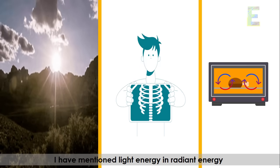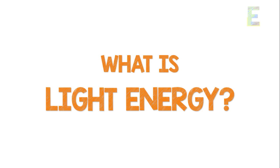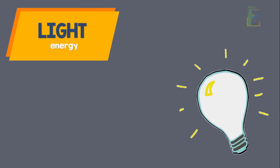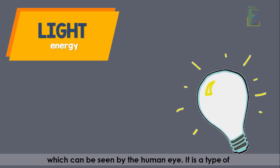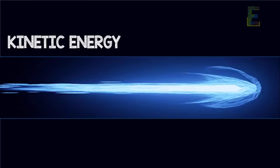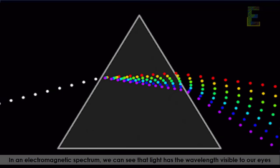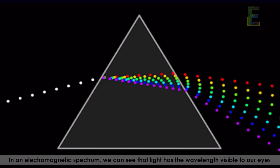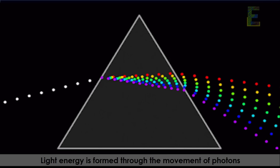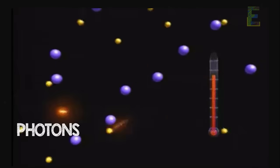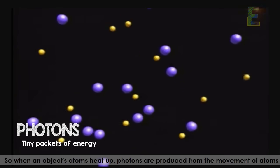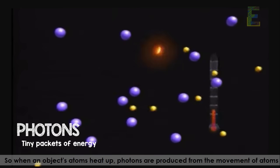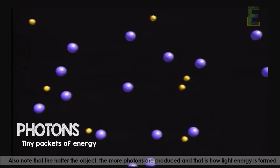Now, what is light energy? Light energy is a form of electromagnetic radiation of a wavelength which can be seen by the human eye. It is a type of kinetic energy. In the electromagnetic spectrum, light has wavelengths visible to our eyes. Light energy is formed through the movement of photons — photons are like tiny pockets of energy. When an object's atoms heat up, photons are produced from the movement of atoms.